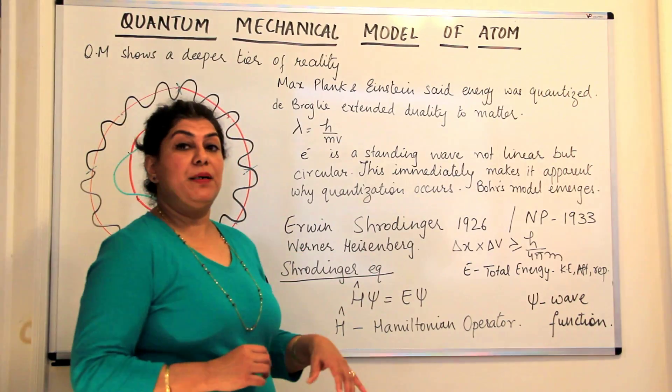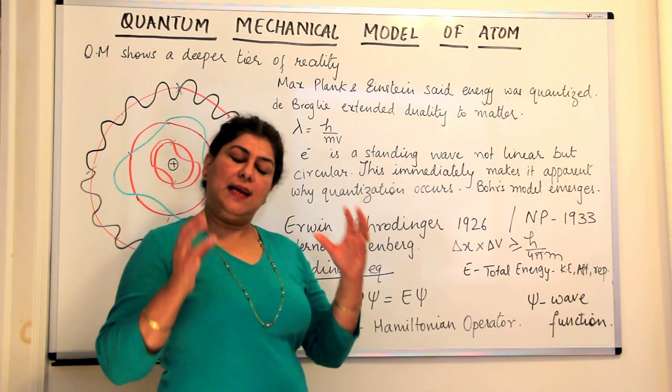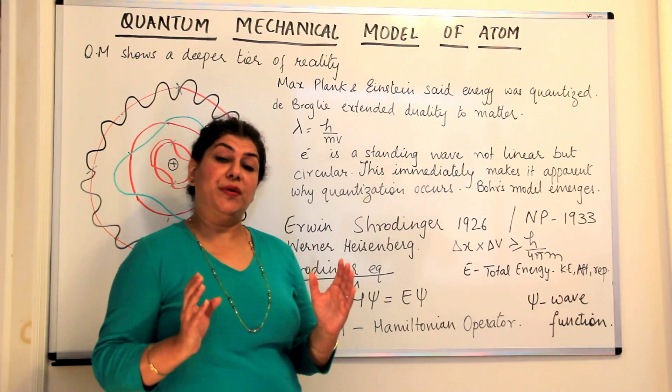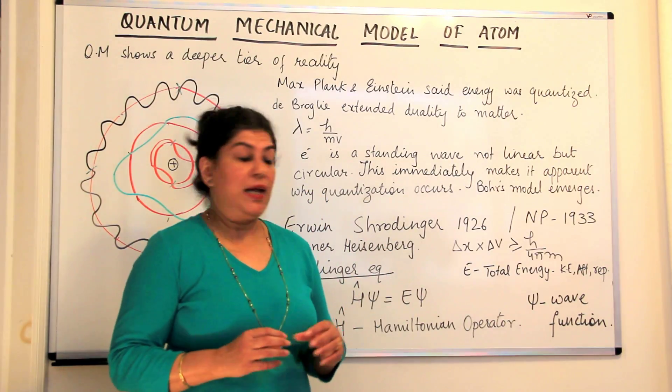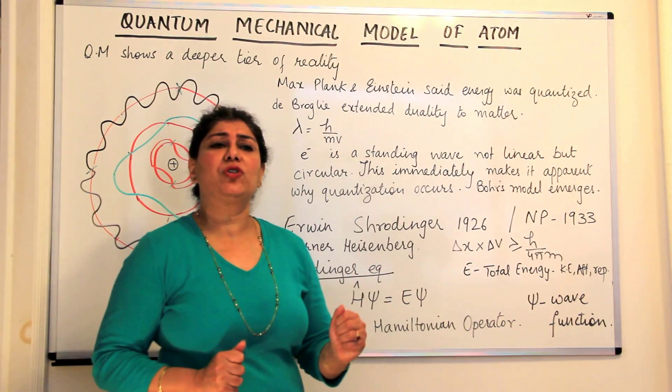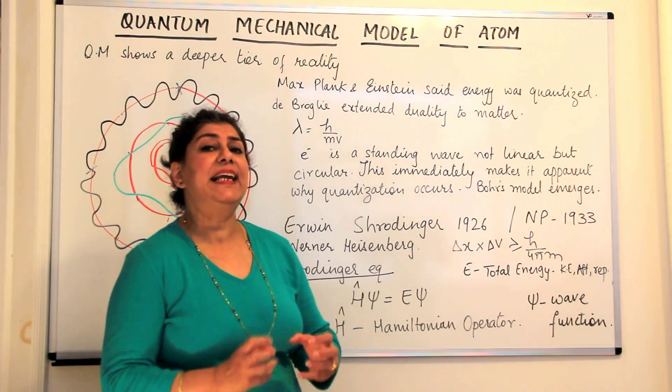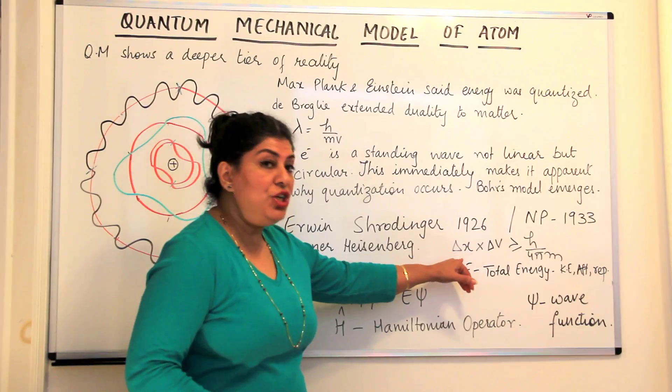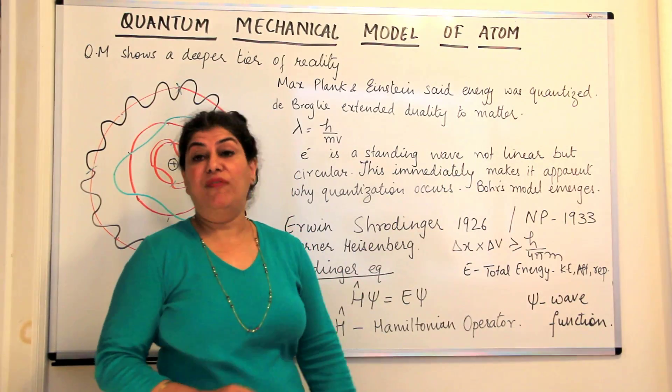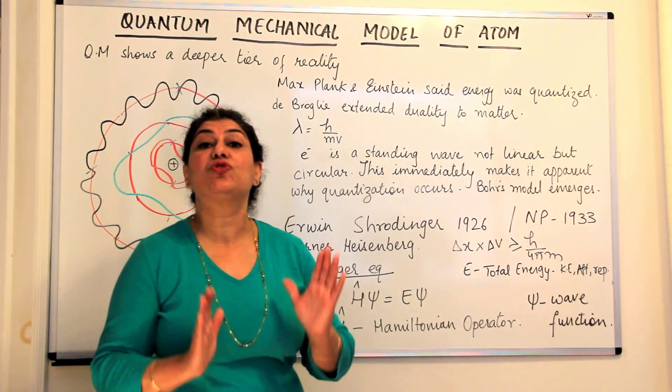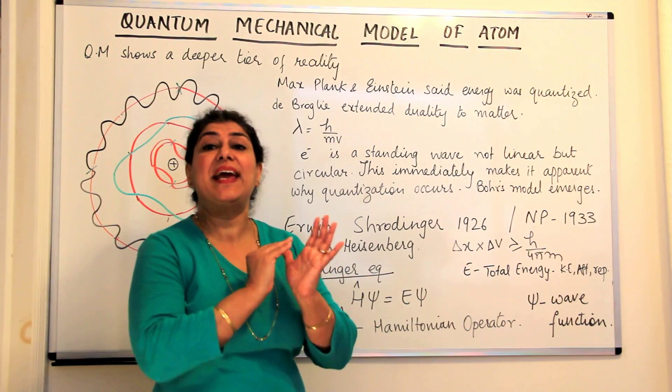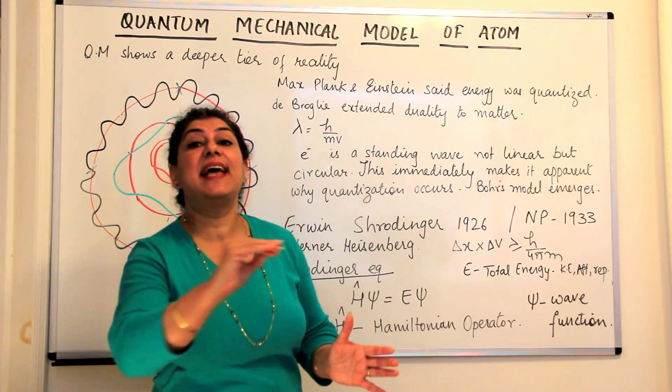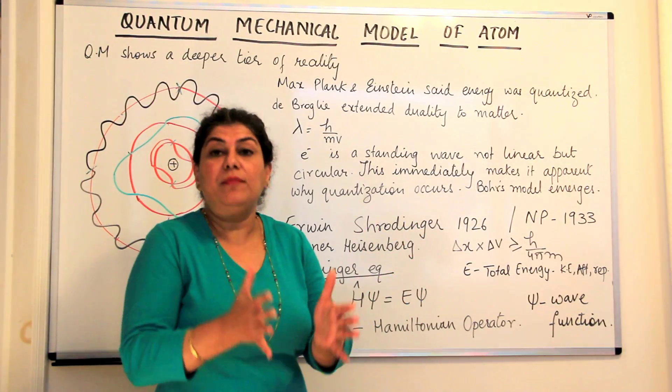We know about Heisenberg, he considered, took into consideration both the wave-like and particle-like nature of electrons and he said that it is impossible to simultaneously tell exactly the position and the momentum of an electron. You can never give an exact position and the exact momentum of an electron simultaneously.